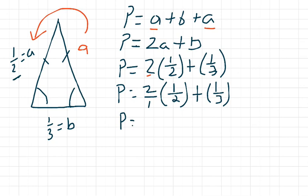We're reviewing how to multiply fractions from our previous unit. We just go straight across. So 2 times 1 is 2, and 1 times 2 is 2, and I'm going to put the one-third over there.